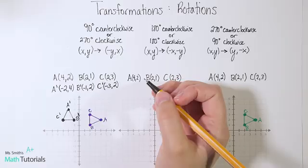Plotting the new image: A prime at (2, -4), B prime at (1, -2), and C prime at (3, -2). Let's go ahead and connect the dots. As you can see, we just went either 90 degrees clockwise or 270 degrees counterclockwise.